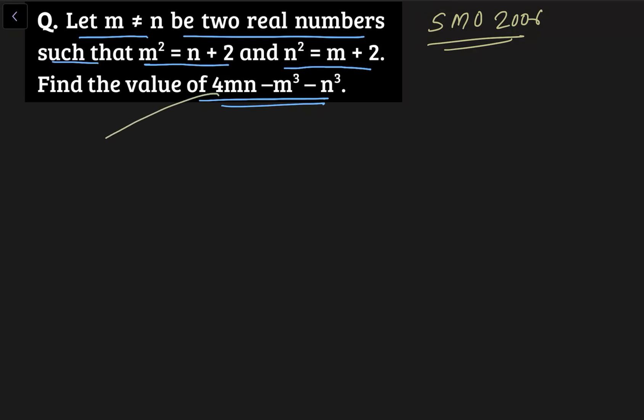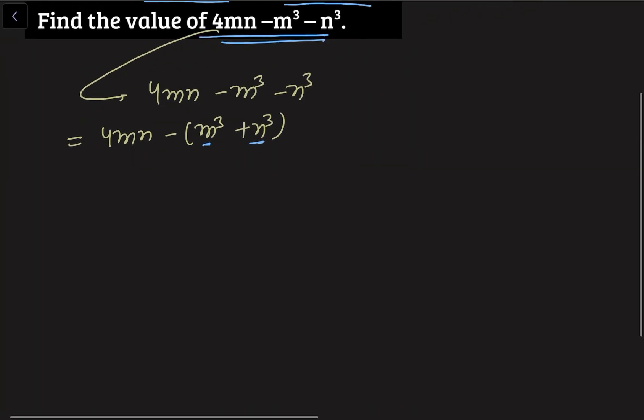Now first let's analyze this relation whose value we need to find: 4mn - m³ - n³. This thing I can write like 4mn - (m³ + n³). Well and fine. Now this thing m³ + n³, it is a form a³ + b³, so we can use that identity. So what we are getting is 4mn - (m + n)(m² - mn + n²). Well and fine.